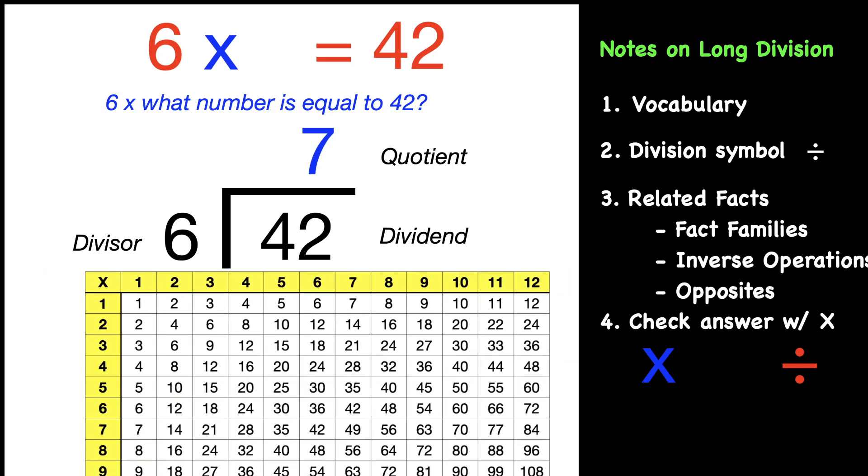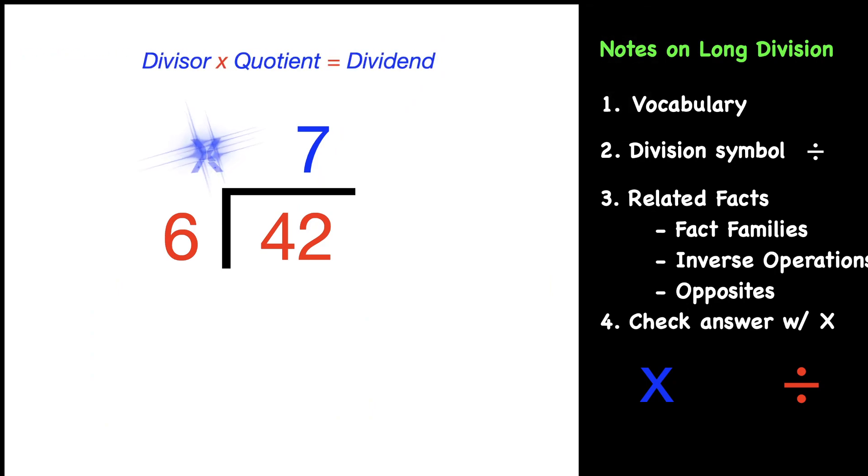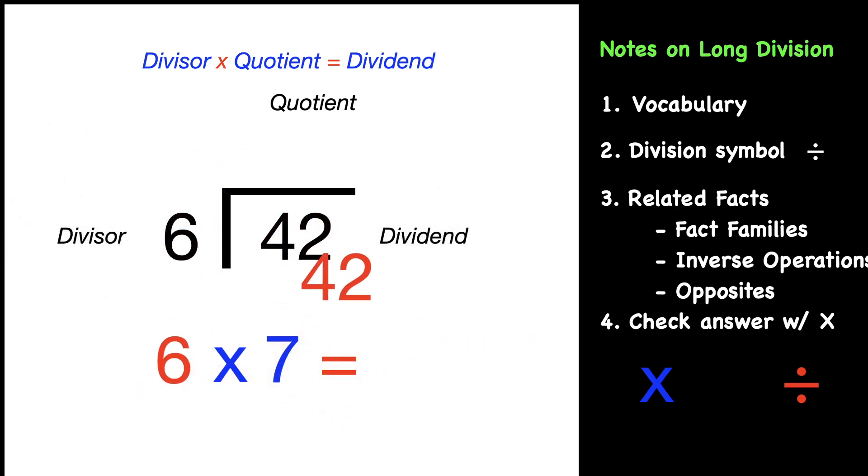Using a multiplication chart, we said our divisor was 6. We're using multiplication. We weren't sure exactly what number, but we did know we were using a dividend of 42. And if we look straight up, that's where we got our 7. We can check our work by multiplying our divisor times our quotient: 6 × 7 = 42, our dividend.